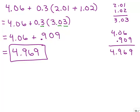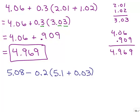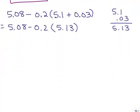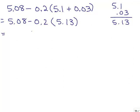Here's one for you. Put the video on pause and try this on your own first. Once again, we've got parentheses — we need to do that first. Line up the decimal points, and that gives you 5.13. So we have 5.08 minus 0.2 times 5.13. We're going to have to do this multiplication before we do the subtraction from the 5.08.